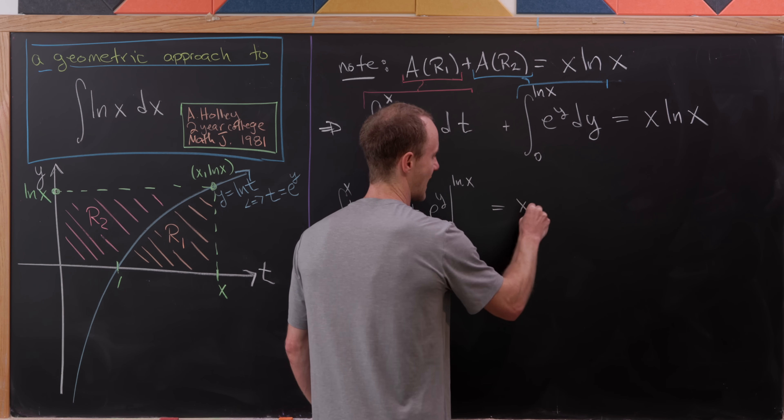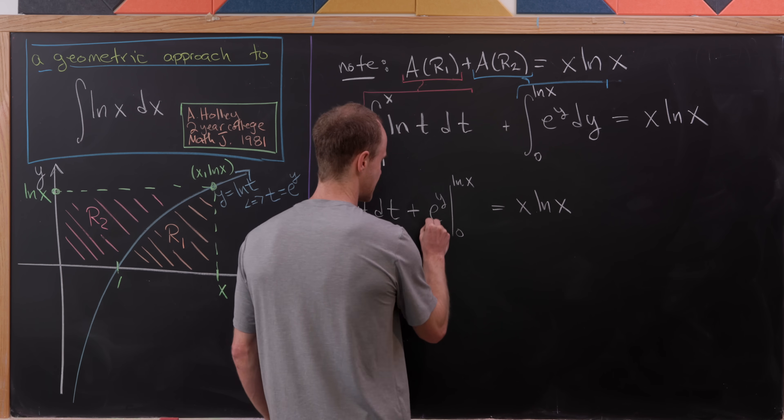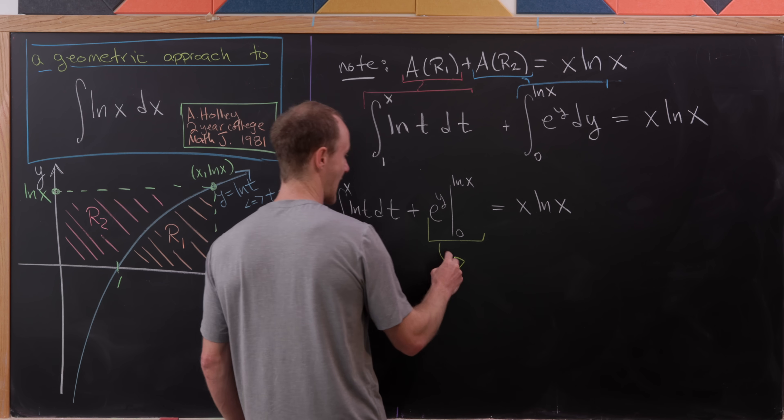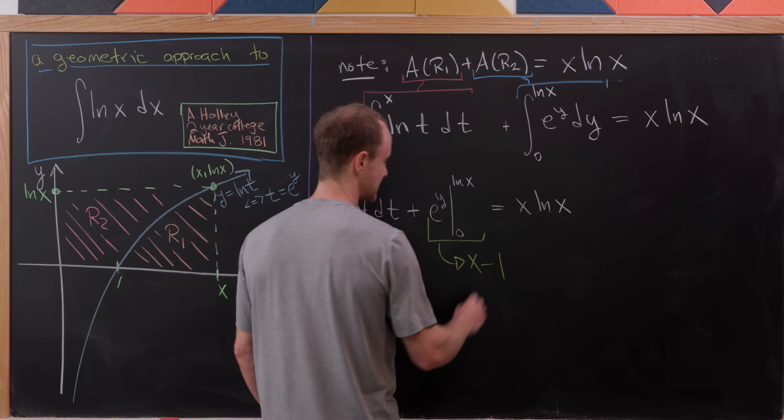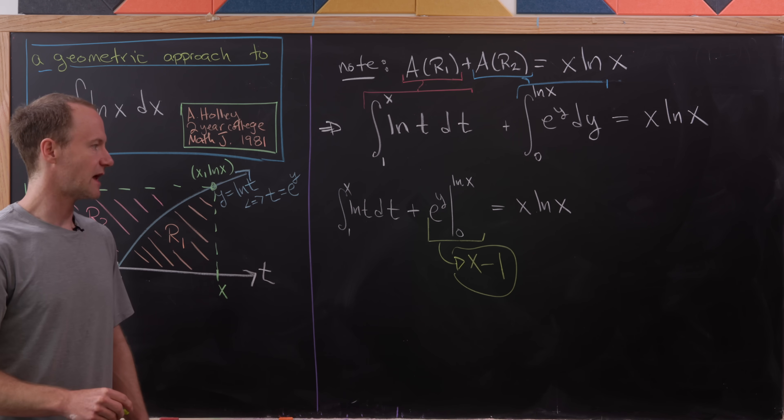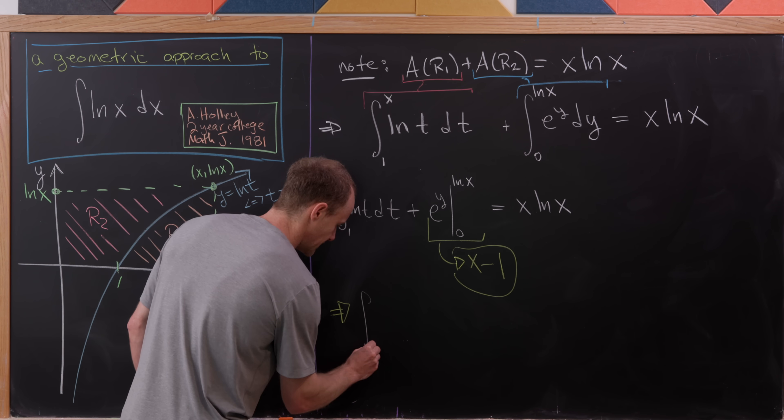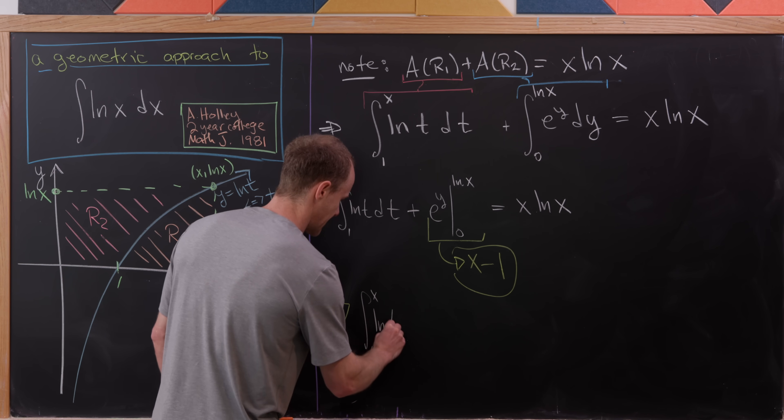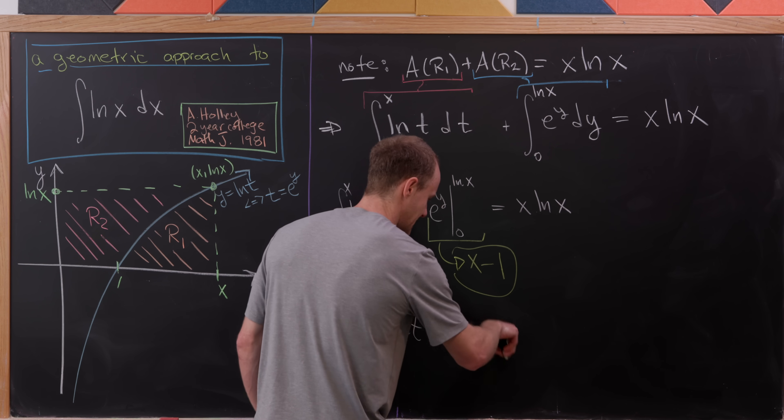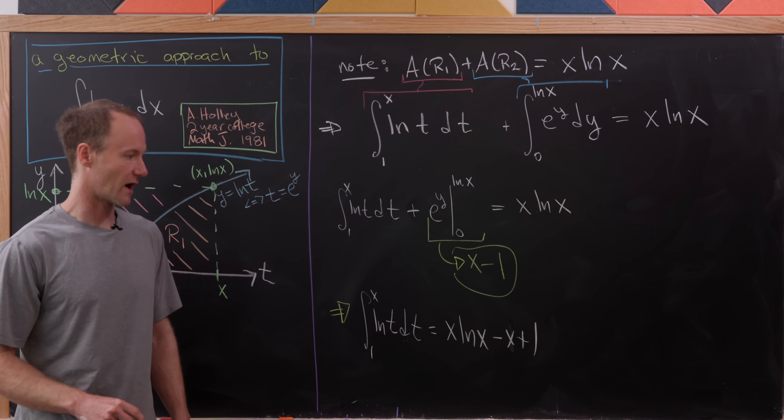But of course, we can take this e to the y evaluated at natural log of x and 0 and rewrite that as x minus e to the 0, which is equal to x minus 1. But now moving things around, we'll see that we have our antiderivative. So we have the integral from 1 to x of natural log of t dt is equal to x natural log of x minus x plus 1, just coming from moving that yellow stuff to the right hand side of the equation.